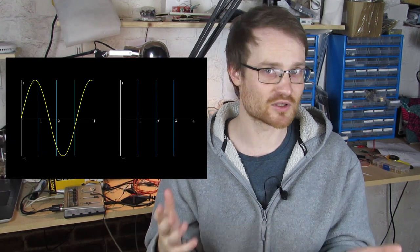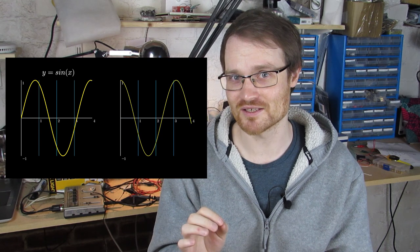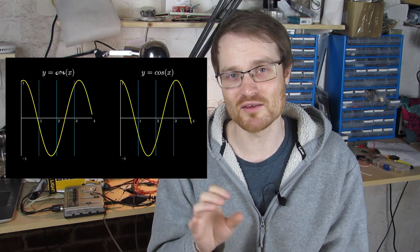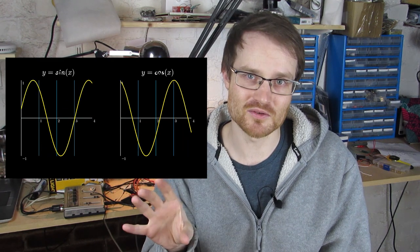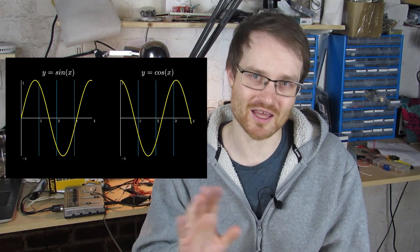Talking about the phase of that sine wave is talking about how those sine waves stack up relative to one another. If you remember back to your maths lessons at school, you'll probably remember that there's more than one type of sinusoid. We've got sine waves which look like this, and we've got cosine waves which look like this. These two waves are both the same wave, just one has a different phase to the other.